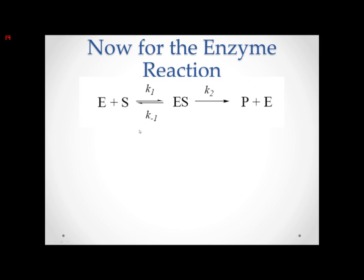Continuing on, this is an enzyme-substrate reaction. We have enzyme plus the substrate going to form an enzyme-substrate complex. From here it has two choices. The one it most commonly takes is going back and regressing into enzyme and substrate. But on rare occasions, this ES complex can go forward and form the product, then reform the enzyme. Each one of these steps has a rate constant: K1 for E + S to ES, K minus 1 for ES to E + S, and K2 for ES to P + E.